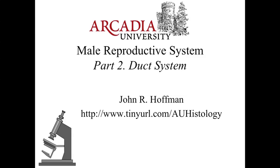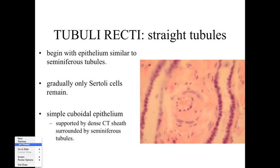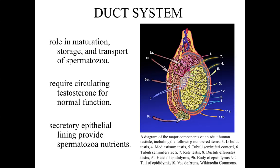Hello and welcome to part two of our lecture series on the male reproductive system. In part two we're going to focus in on the duct system, which is going to be involved with taking the sperm cells produced by the seminiferous tubules and ultimately delivering them into the female reproductive system to allow for internal fertilization. The duct system includes structures associated with the transport of spermatozoa, but also very important roles in both the storage and maturation of spermatozoa as it passes through this system.